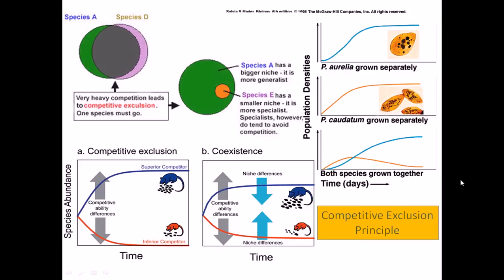And this principle is given by a Russian ecologist called Gause. Let's first talk about the basic view of Competitive Exclusion Principle. Now what it suggests is that if there is very heavy competition between two different species, it will lead to the dismissal of one species, it will lead to the extinction of one species and only one species can exist.